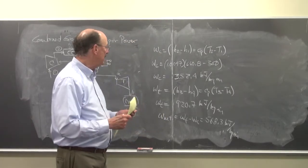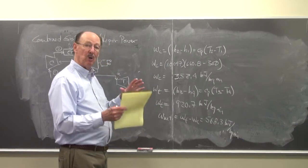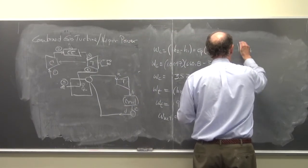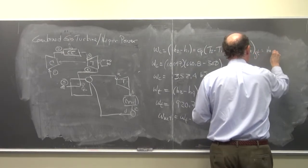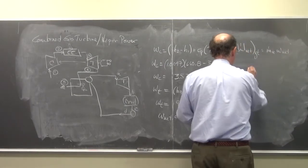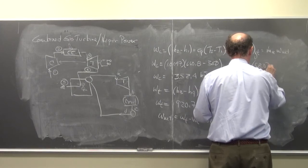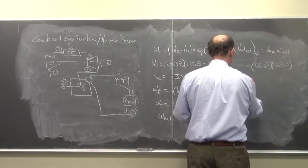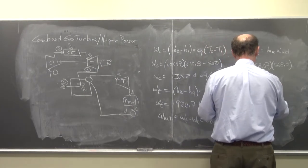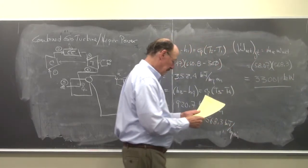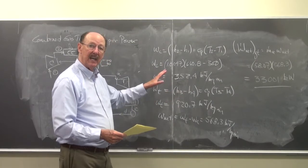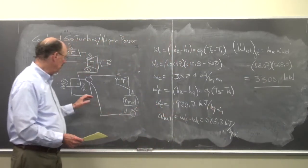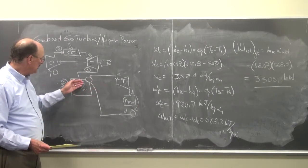And so I can find the total work because I know the mass flow rate. I found the mass flow rate earlier. So I can find the total power of the gas turbine. So W dot net gas turbine is equal to m dot air times W net. So this is equal to 58.07 times 568.3, which equals 33,007 kilowatts. So of the 61,000-something of the heat in, 33 was converted into this amount of work.